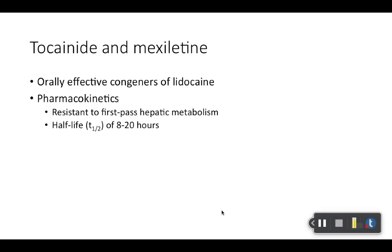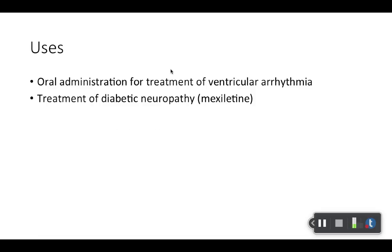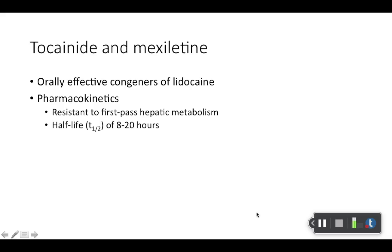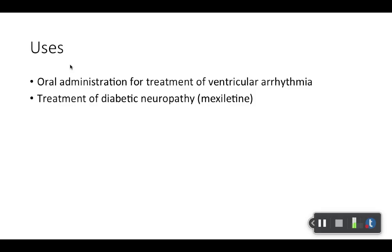Tocainide and mexiletine are pretty similar, so you can lump them together. They are PO, which can be an advantage. Mexiletine is interesting because it can also be used for diabetic neuropathy. The tocainide — or zircanonide — is no longer sold in the United States, so it's more for historical purposes; you can cross that out for testing. I won't put that one on the test, but mexiletine is still made. As I was saying, it can be used off-label for treatment of diabetic neuropathies. However, I would stay away from it — we'll see the adverse effects and box warnings in a moment. Think of it mainly as being used for ventricular arrhythmias, specifically life-threatening ventricular arrhythmias.